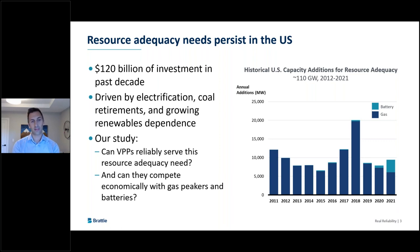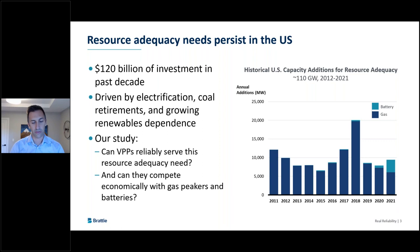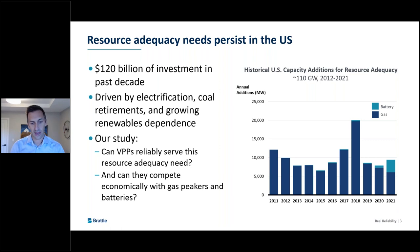Our view is that this need for new capacity will persist into the future, driven by electrification-related peak demand growth, coal retirements and retirements of other fossil generation, and our growing dependence on renewables — which are a great source of clean energy but don't always contribute significantly to resource adequacy. With our study, we set out to answer two questions: Can VPPs reliably serve our resource adequacy need in the same way that gas peakers and batteries have historically? And can those VPPs compete economically with those conventional resources?